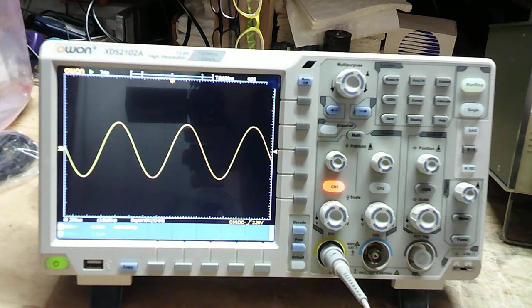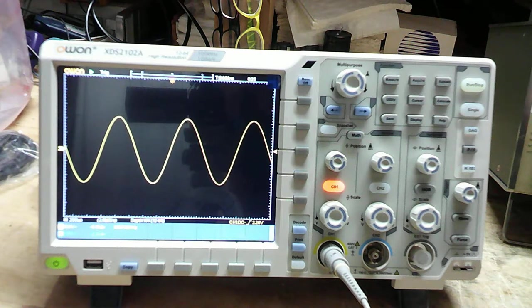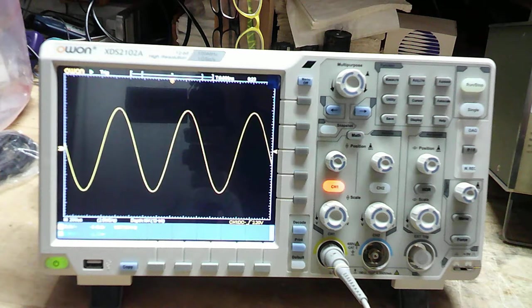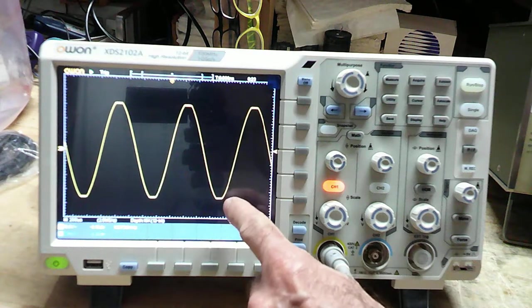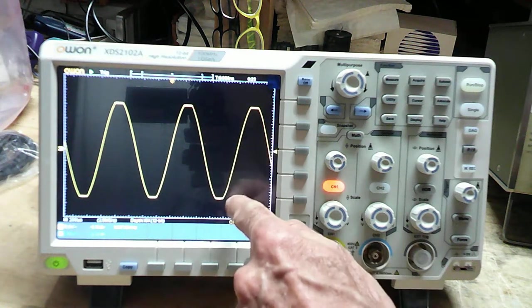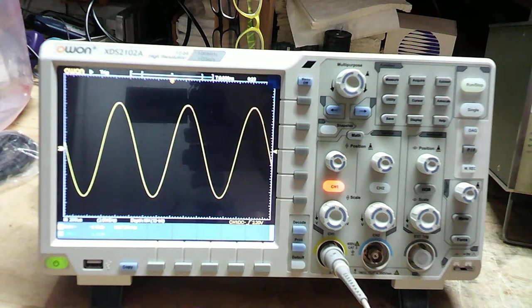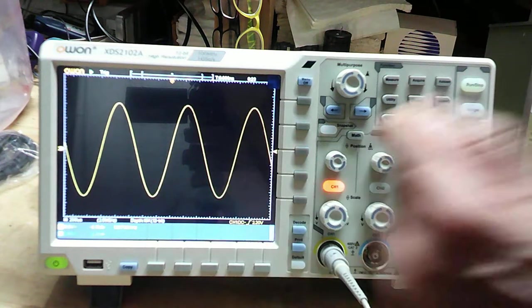And look for onset of clipping. There we go. You can just start to see it clipping at the top and the bottom here. So I'm going to drop that back down. And that's a good clean signal.